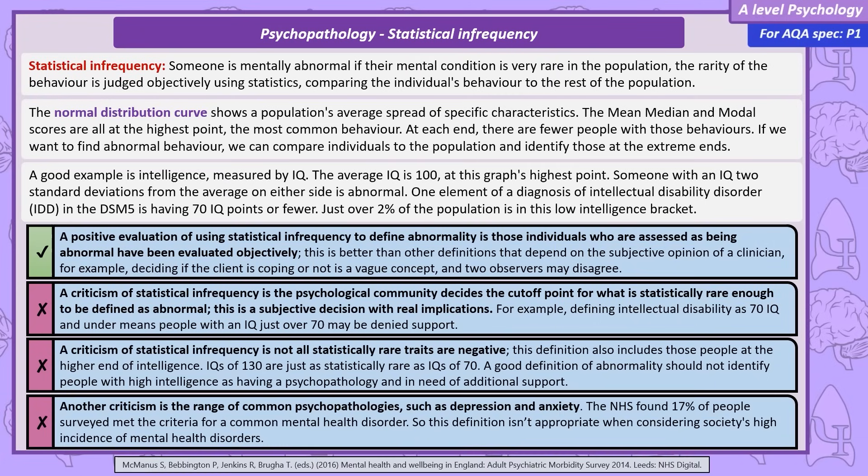Another valid criticism of statistical infrequency is that some psychopathologies are quite common. Two examples of common mental health conditions are depression and anxiety. In a survey by the NHS, about one in six adults — so 17% of those people surveyed — met the criteria for a common mental health disorder. So this definition of statistical infrequency doesn't match the high incidence of mental health disorders in society.